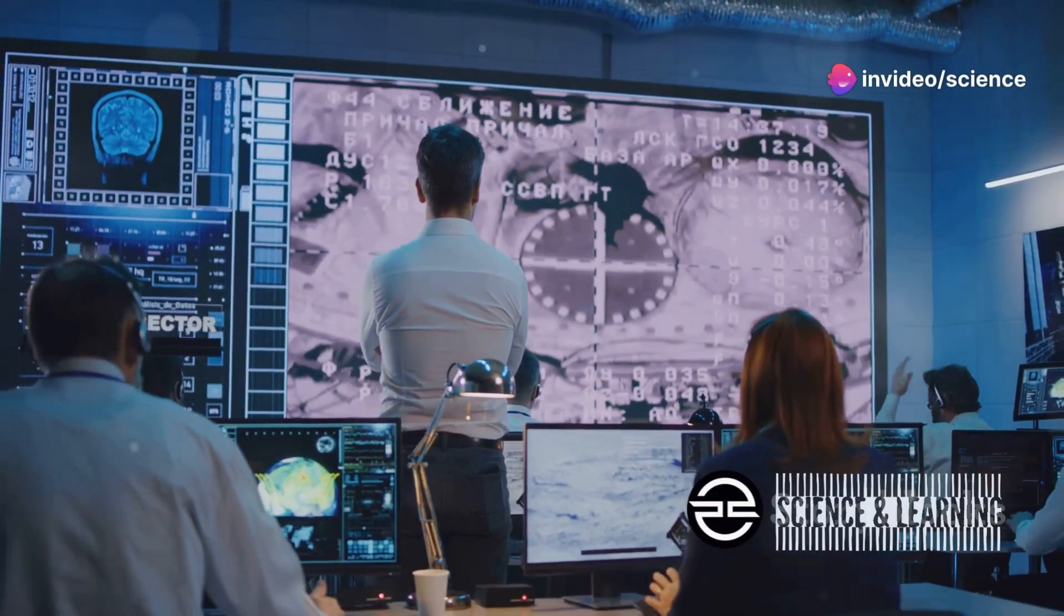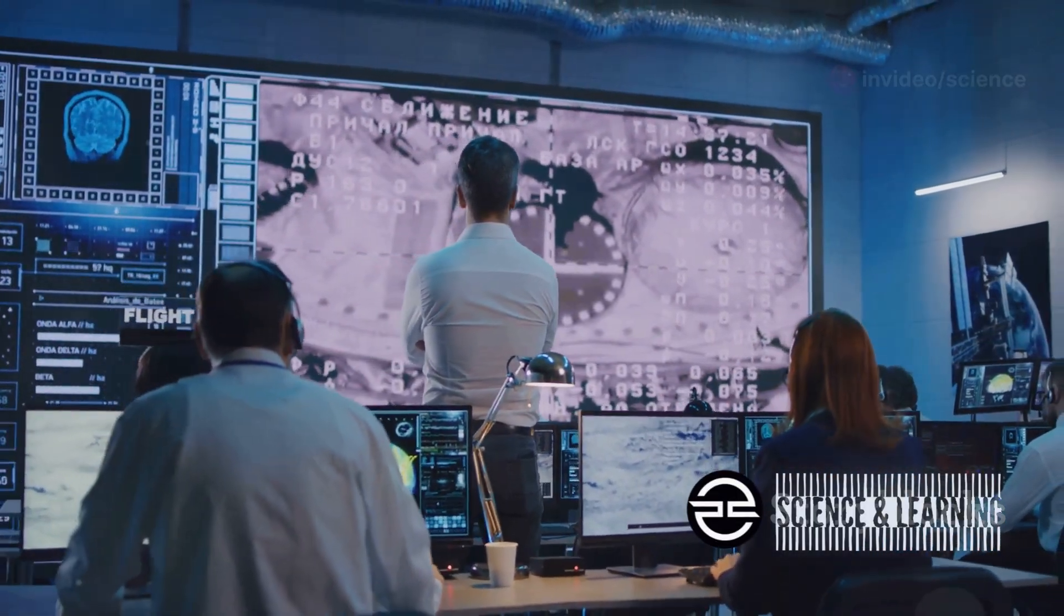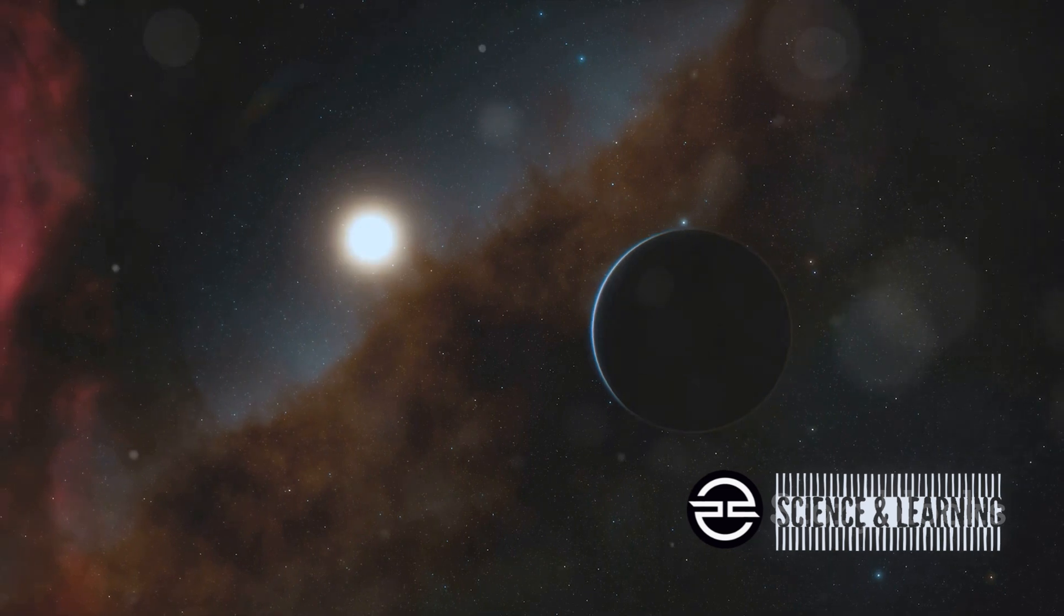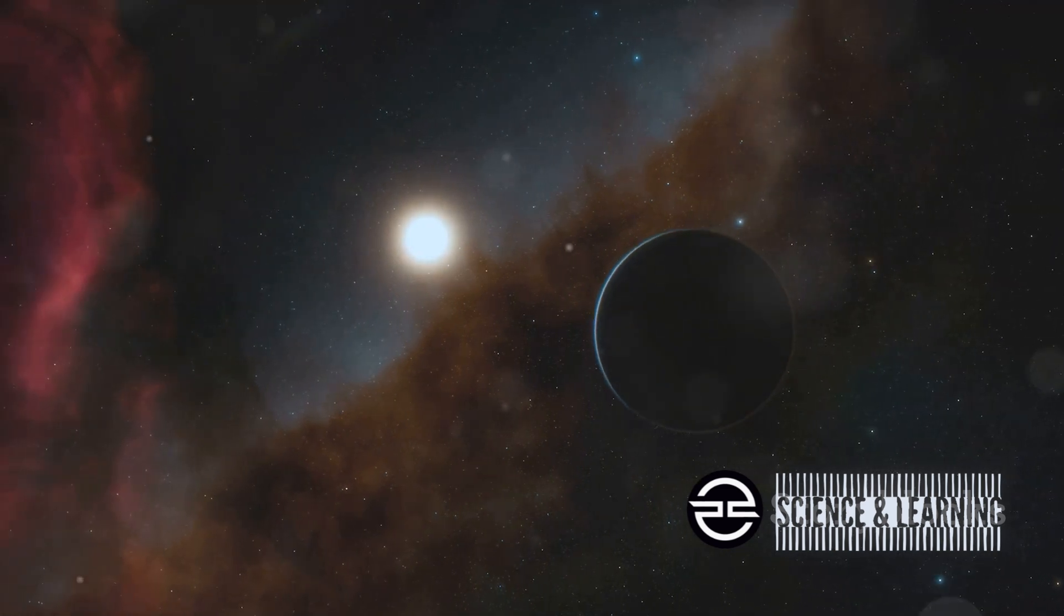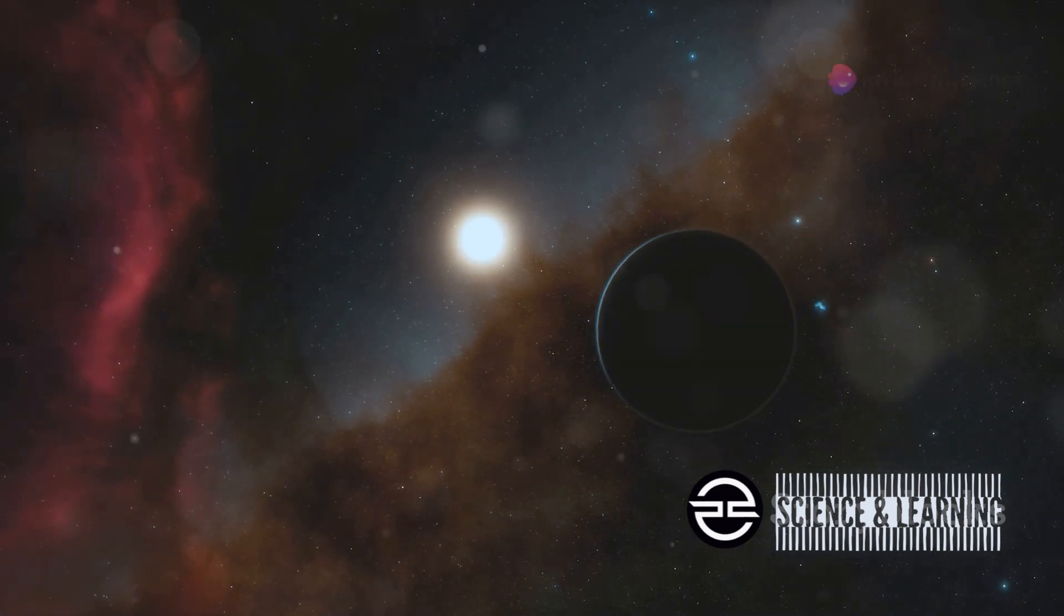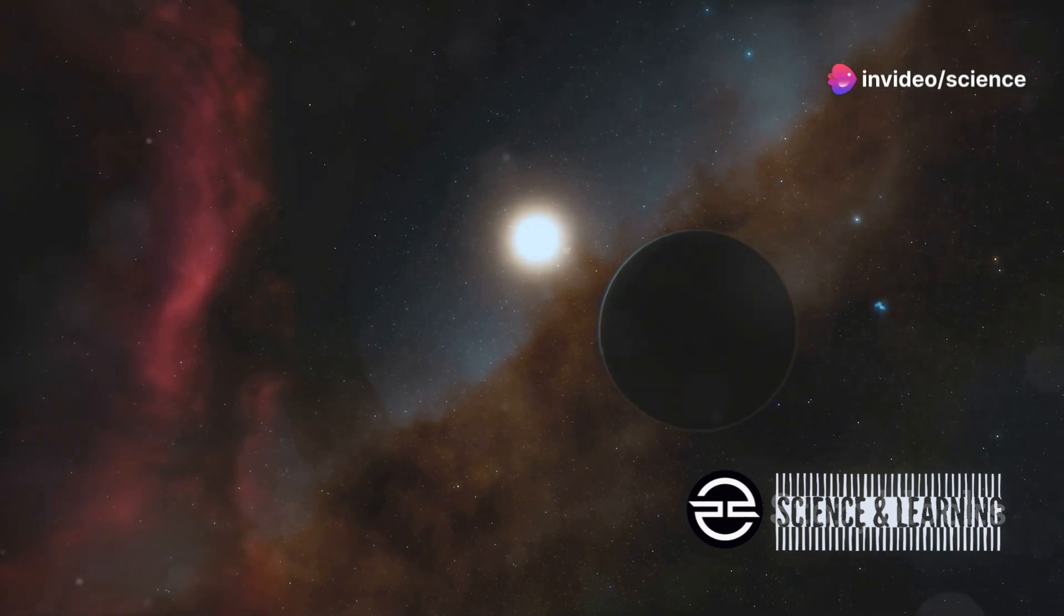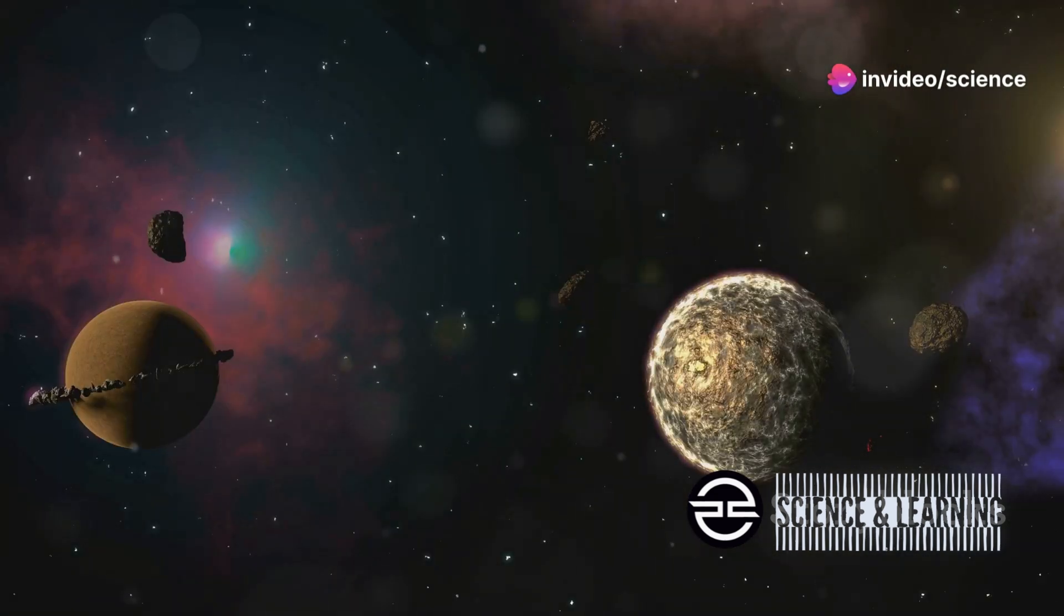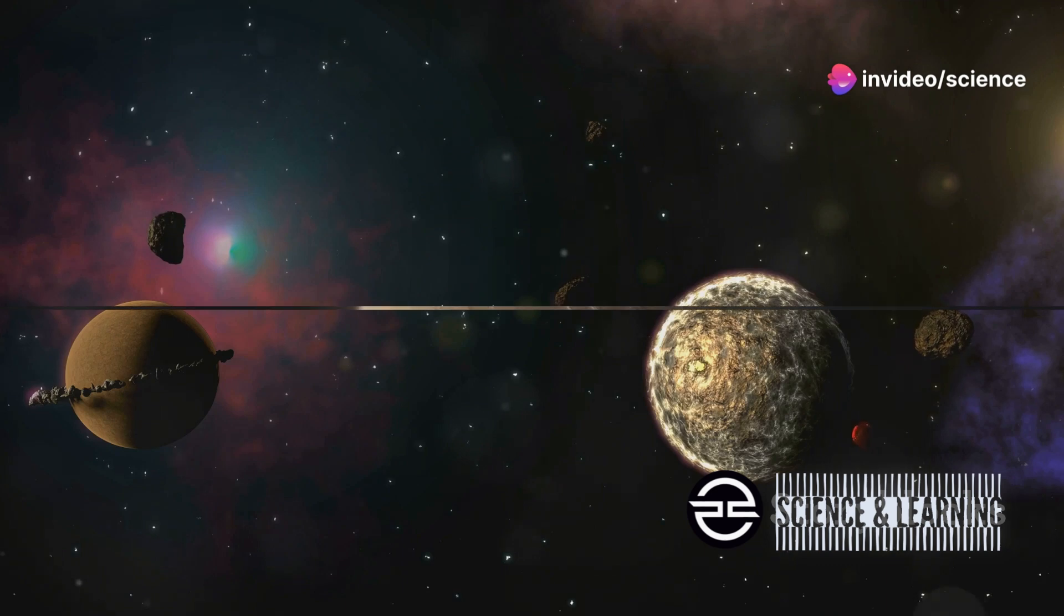The data TESS collects is then analyzed by scientists here on Earth. By studying the frequency and depth of the transits, scientists can determine the size, orbit, and even some basic properties of the exoplanet. It's like piecing together a puzzle, one transit at a time.